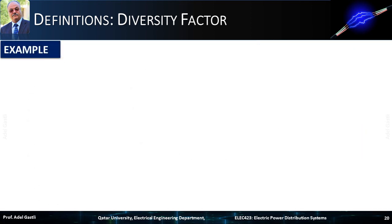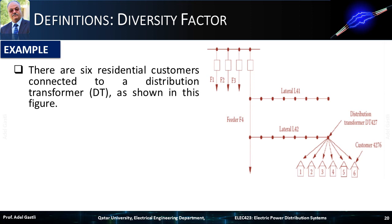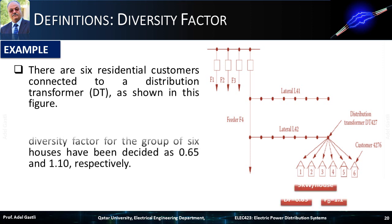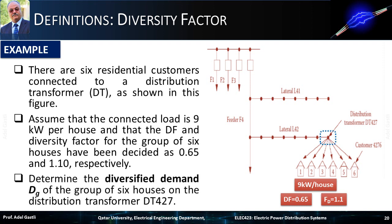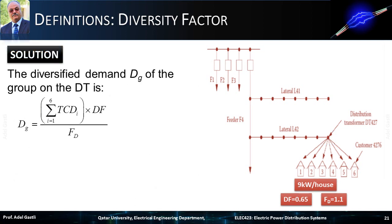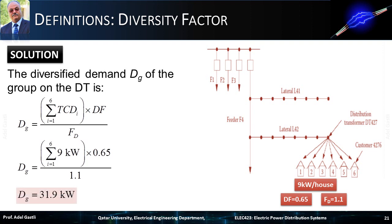Let's consider a second example. There are 6 residential customers connected to a distribution transformer. Assume the connected load is 9 kW per house, and that the demand factor and diversity factor for the group of 6 houses have been decided as 0.65 and 1.1, respectively. We want to determine the diversified demand of the group of 6 houses on the distribution transformer DT427. Using the diversified demand equation — summing the 6 houses' total connected loads, multiplying by the demand factor, and dividing by the diversity factor — yields a diversified demand DG of 31.9 kW.